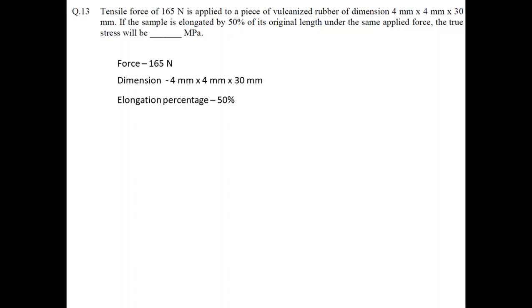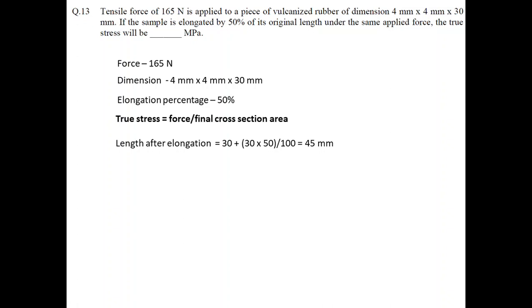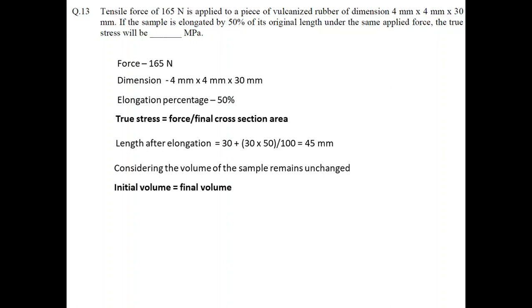The next question asks what the true stress will be when a sample is elongated by 50 percent. The sample dimensions and force are given. As we know, true stress is force divided by the actual or final cross-sectional area. We can determine the cross-sectional area after deformation. After deformation, the new length will be 45 mm, and since volume remains unchanged, the initial volume equals the new cross-sectional area multiplied by the new length of 45 mm.